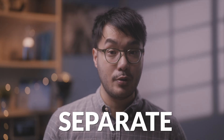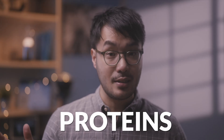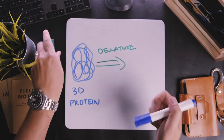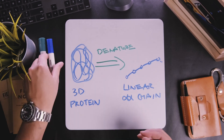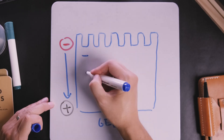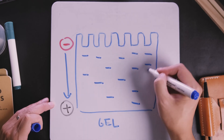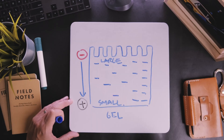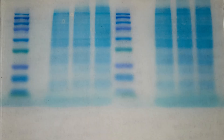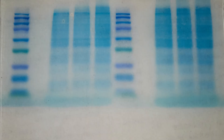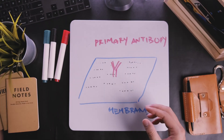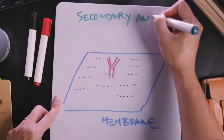SDS-PAGE can be used to separate all the proteins in a sample by size. We denature or unravel the protein into a linear string of amino acids, apply an electrical charge across them, and separate the proteins into different sized bands. After this, we can stain the protein bands using Coomassie staining, or transfer the bands onto a membrane and use specific antibodies to detect specific proteins via Western blotting.